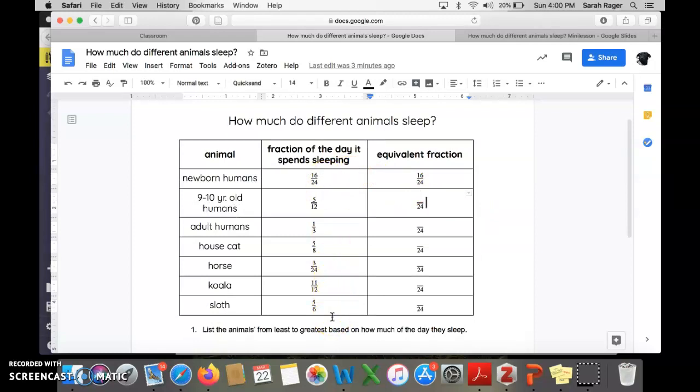Our table here shows the animals we are looking at and the fraction of the day they spend sleeping. Right now these fractions are hard to compare because they have unlike denominators. Not just that we want to know how many hours they sleep every 24 hour day. For us to do that we're going to need to create equivalent fractions with a denominator or whole of 24.